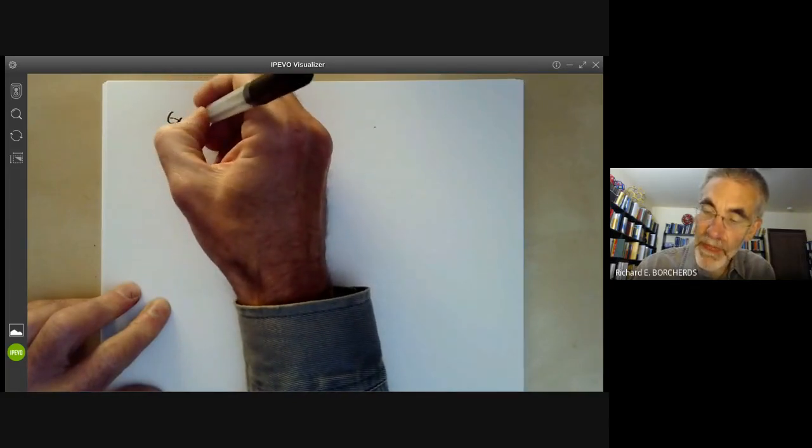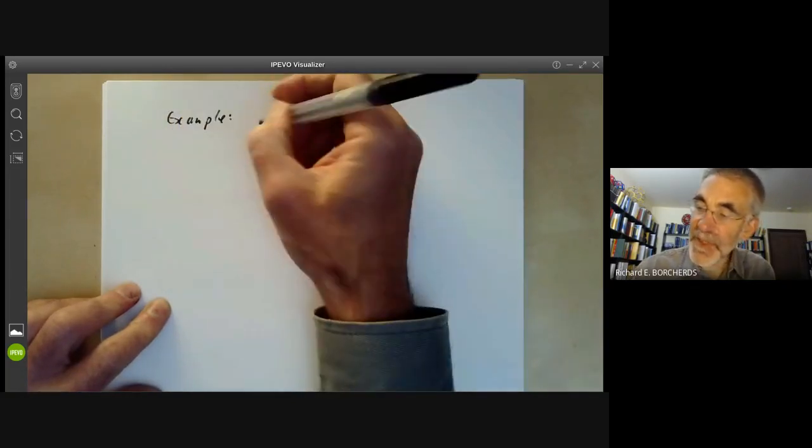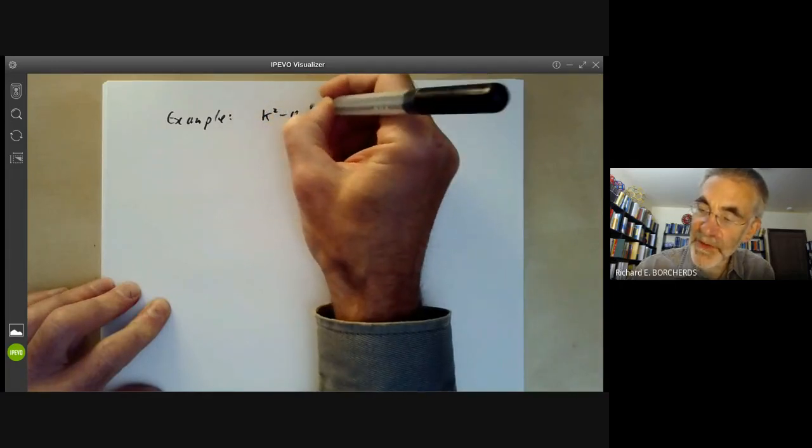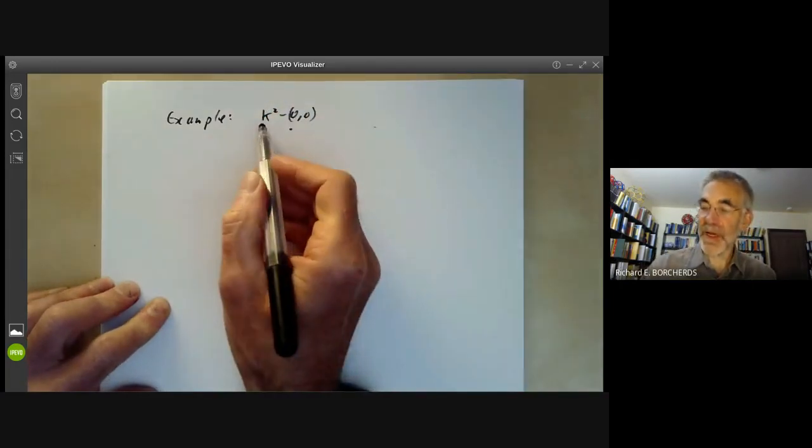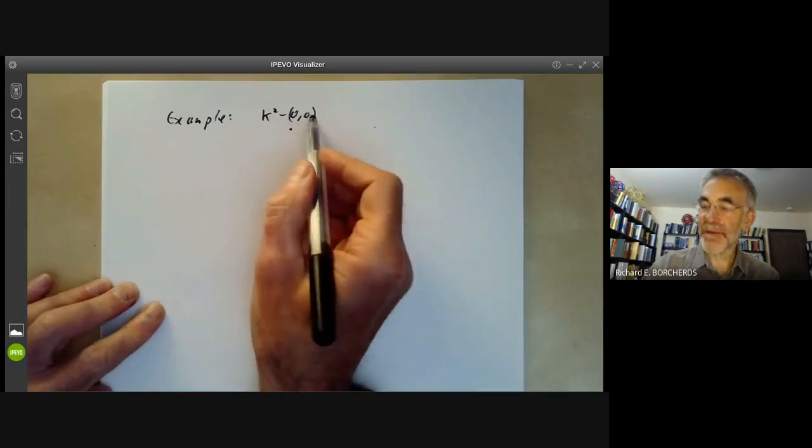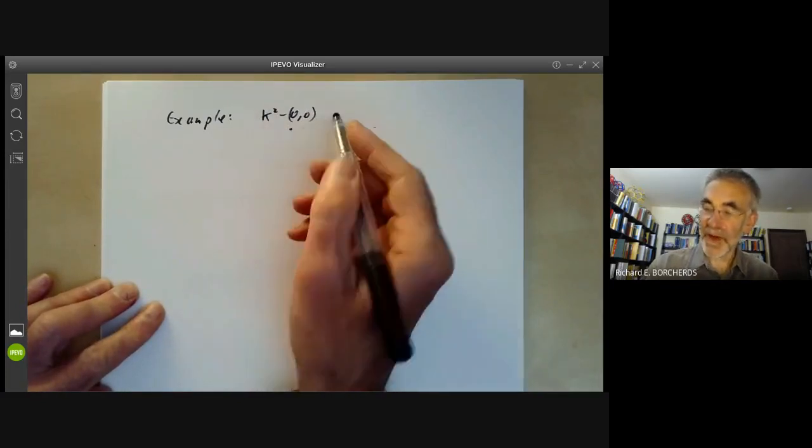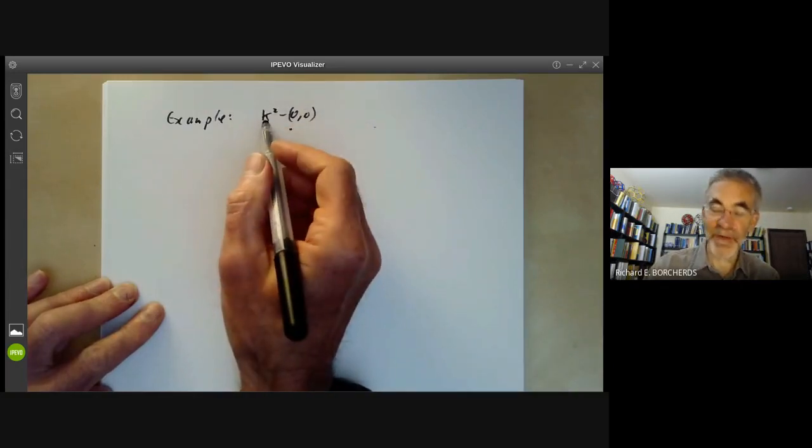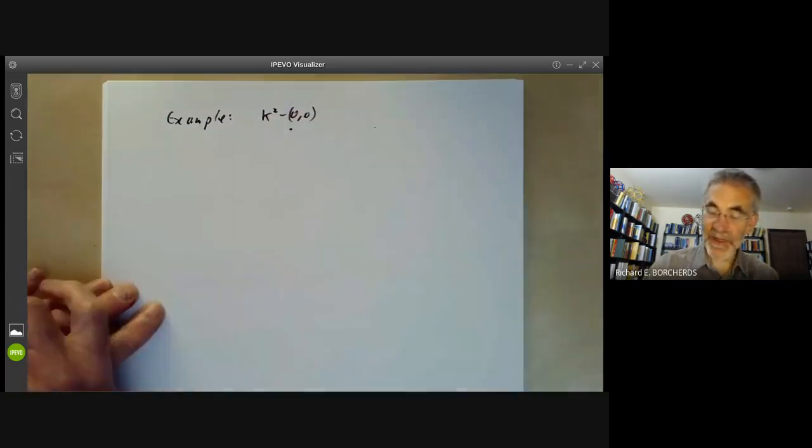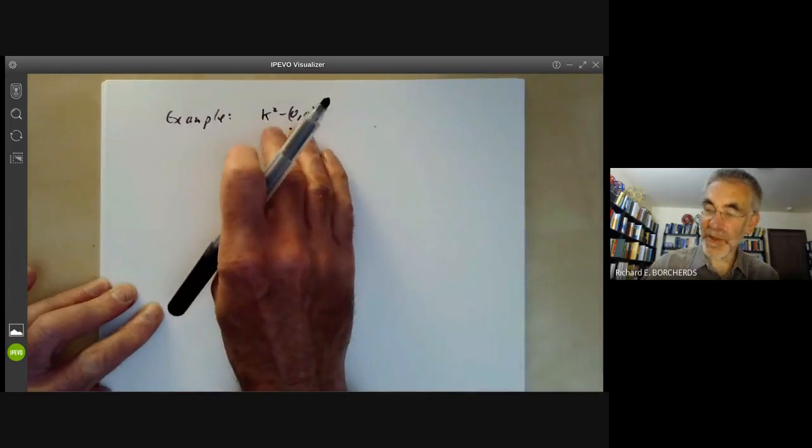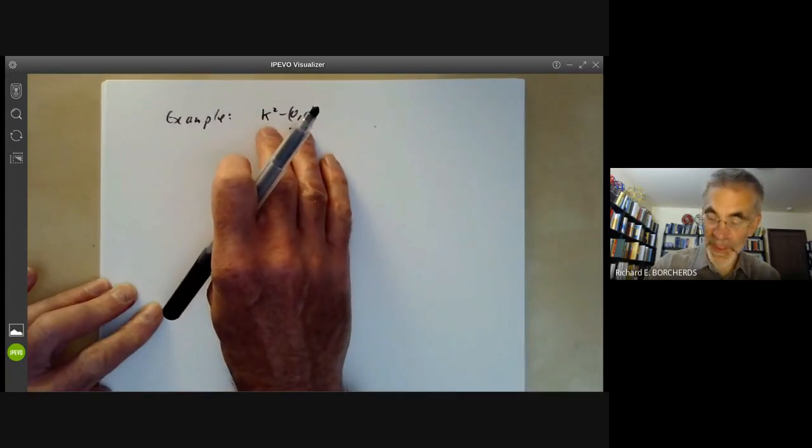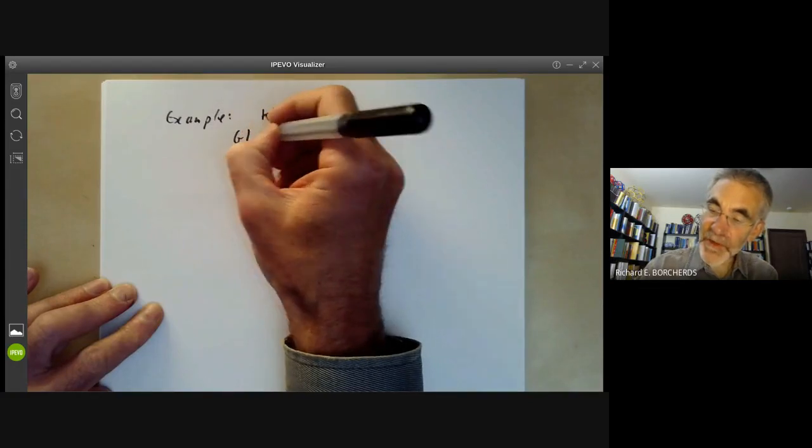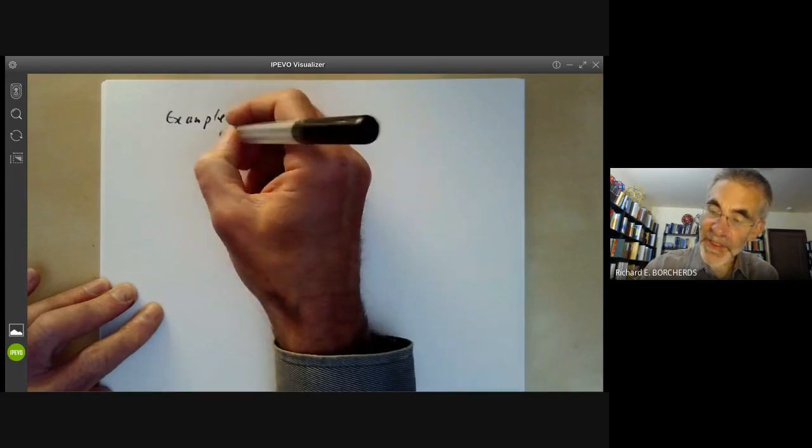So for example, suppose we take K^2 minus the point (0,0). So this variety is neither affine nor projective. It's just a plane minus a point. So it's not a closed subset of the plane. And there's just no way to make this into an affine variety or a projective variety. However, the group GL2 of K acts transitively on it.